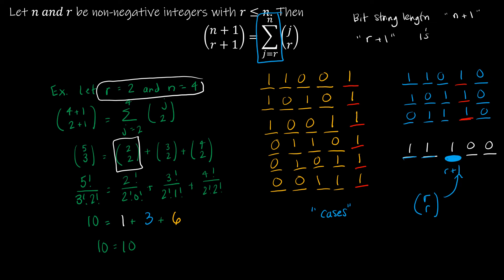I've denoted the position where the last 1 occurs in red. So case 1, let me change colors here. Case 1 was the last 1 in the r plus 1th position.